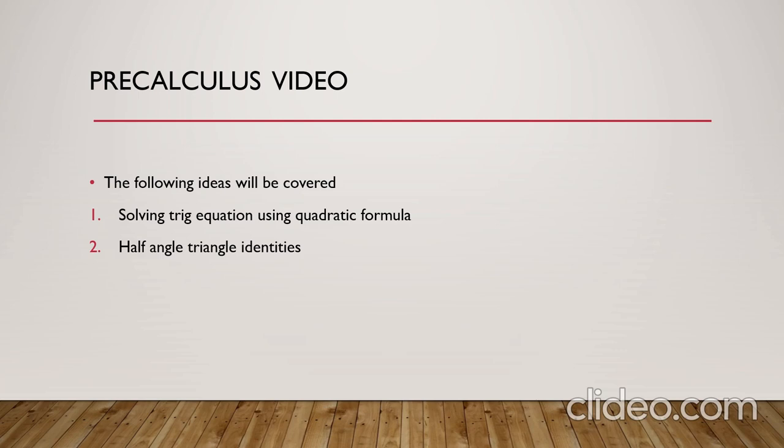trigonometric ratios of angles like 22.5°, which is half of the standard angle 45°, or 15°, which is half of the standard angle 30°. The half-angle triangle identities we will apply to the